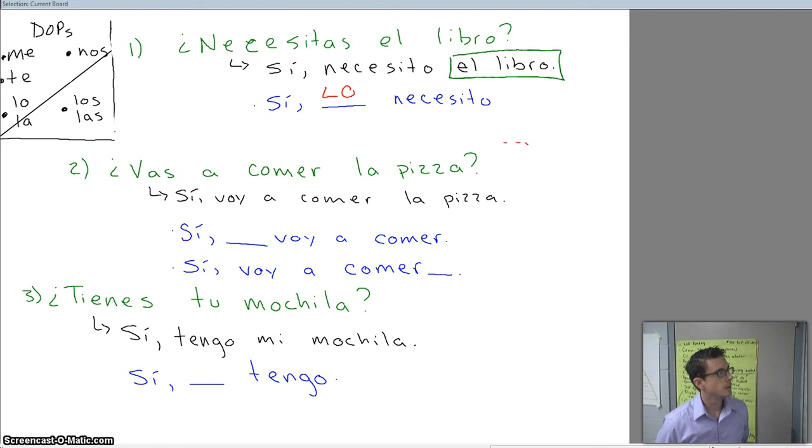Let's look at our second one. Número dos. ¿Vas a comer la pizza? Ask yourself a question. What is the action, number one? What is the action in that question? The action is comer. What is going to be acted on? What is going to be acted upon? What is comer? It is to eat. What is going to be eaten? Well, the pizza. The pizza is what is going to be eaten.